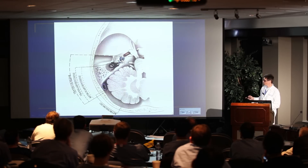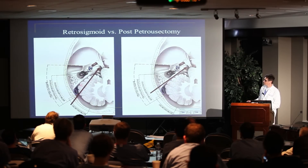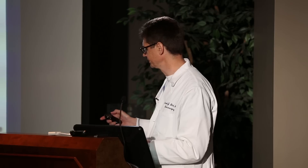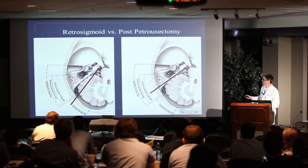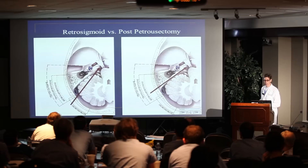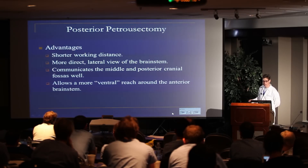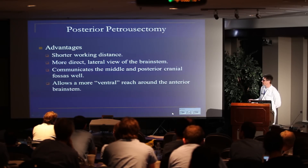What we're really talking about is changing your angle — retro-sigmoid to pre-sigmoid retro-labyrinthine. It doesn't look like it's that different, but there are real advantages. Number one, it remarkably shortens your working distance. If you're trying to get to something near the petroclival junction, being able to come this way really shortens that working distance — it doesn't seem so from the picture, but it actually does, and you'll get a chance to see that.